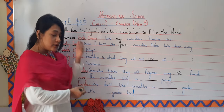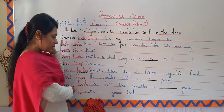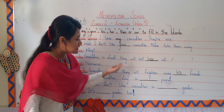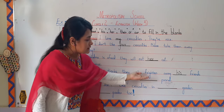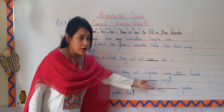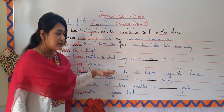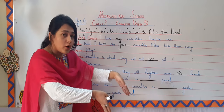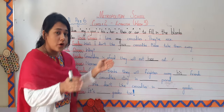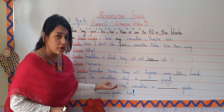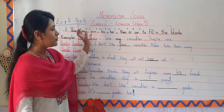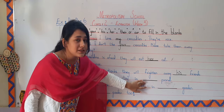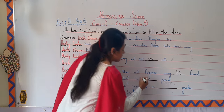Then Uncle Umar replied to Aunty Farida, 'The crocodiles stay in dash pond.' Which means they stay in 'their' pond, because the pond belongs to the crocodiles. So the pronoun we are going to use here is 'their.'